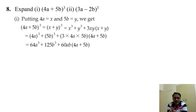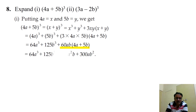After substitution and multiplication, we get 64a³ + 125b³ + 240a²b + 300ab². This is the final answer for the first part.